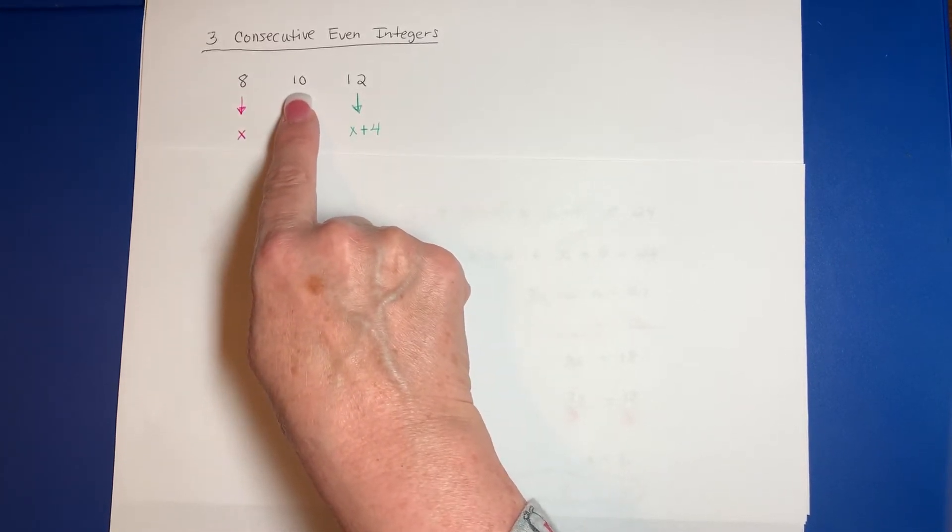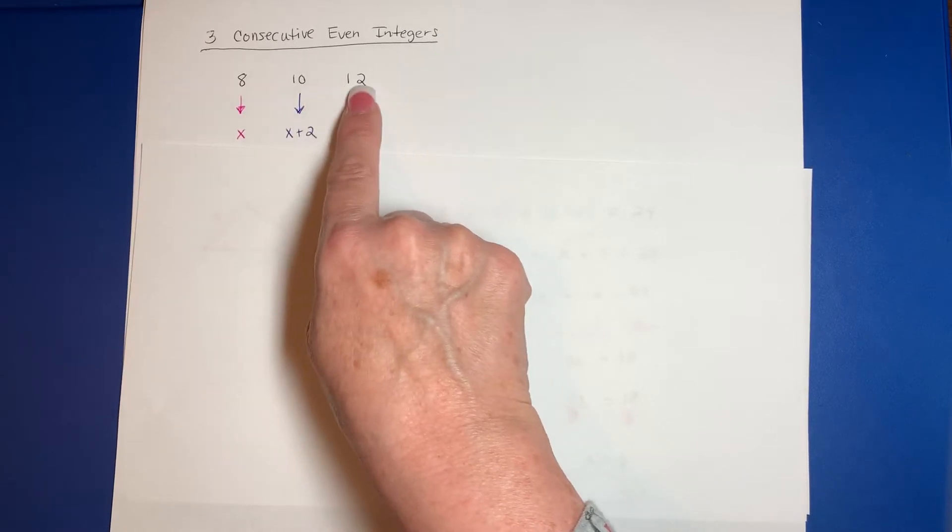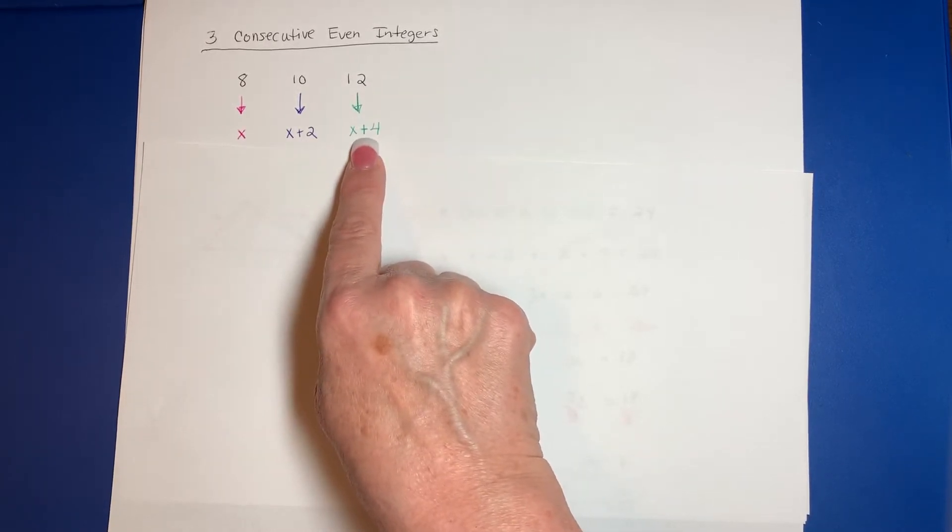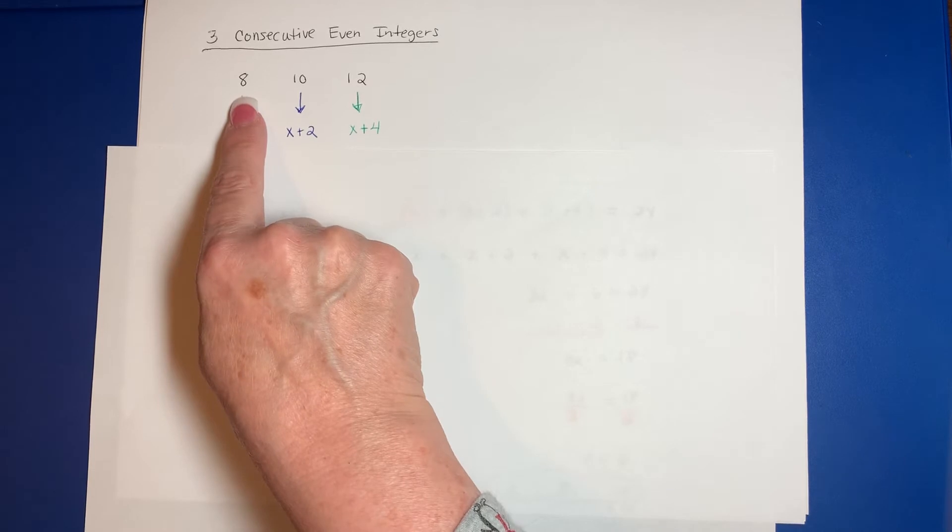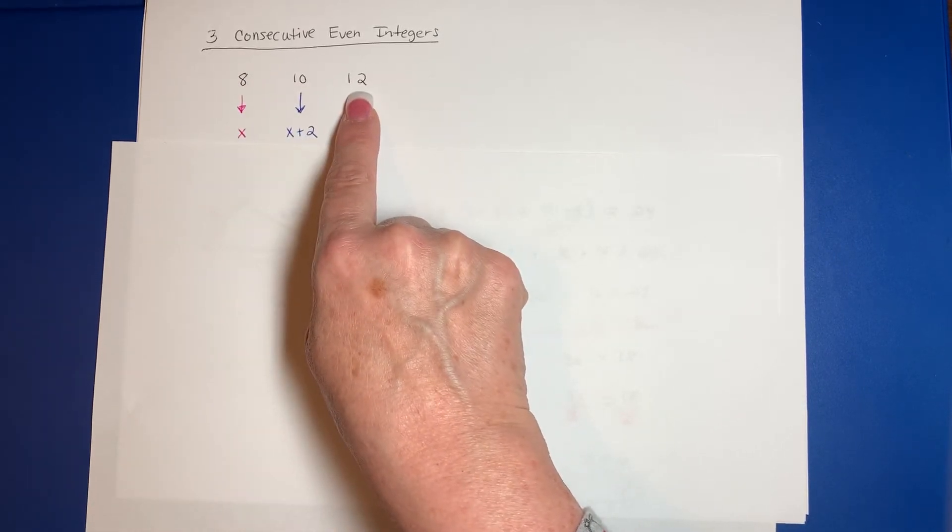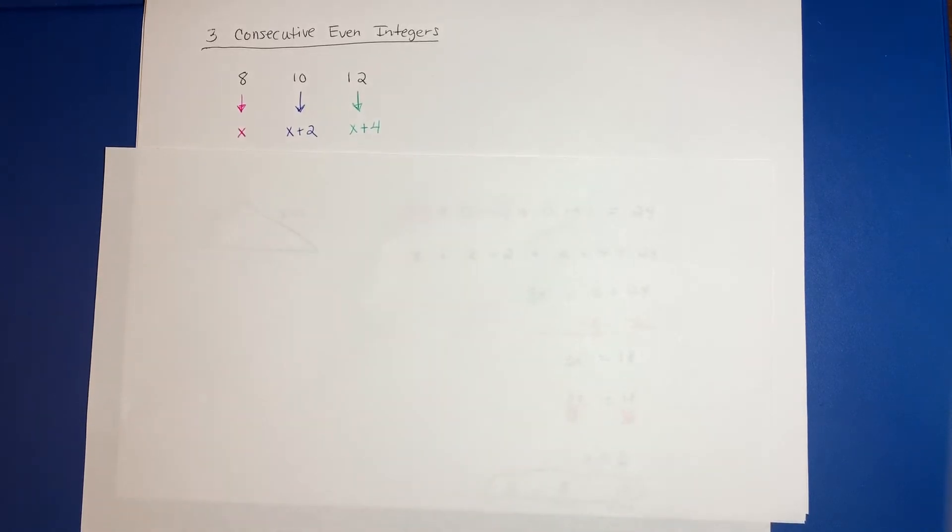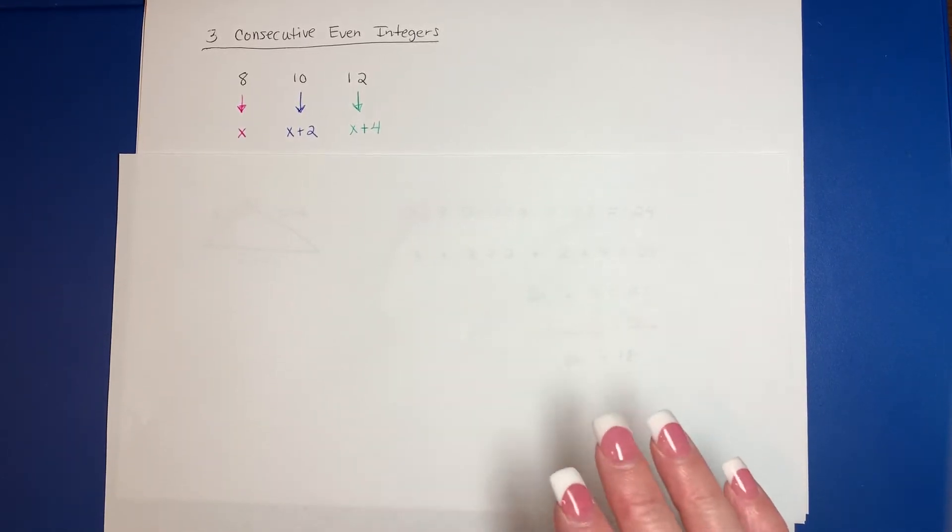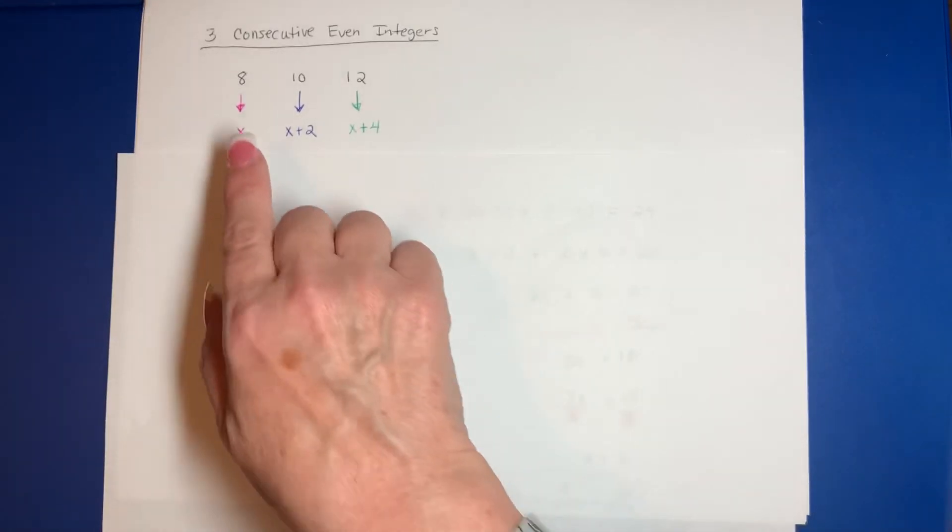The next one after that would be four larger. If this one's 8, 8 plus 4 would be 12. So algebraically speaking, I can call any three consecutive even integers with this pattern.